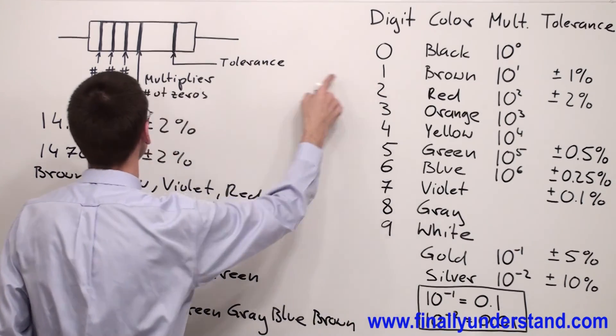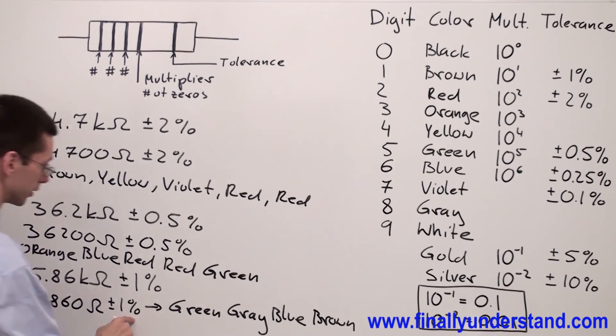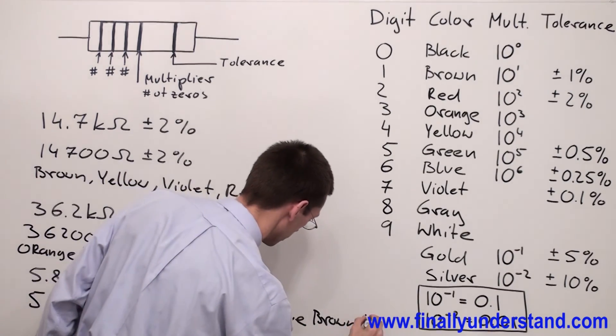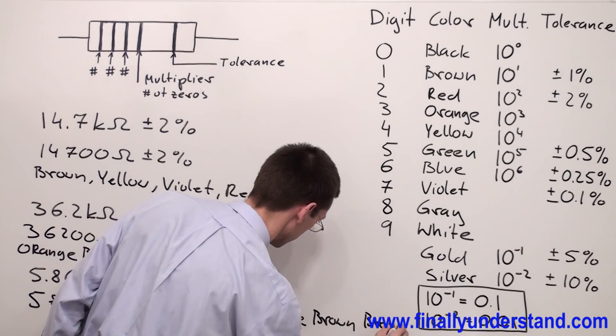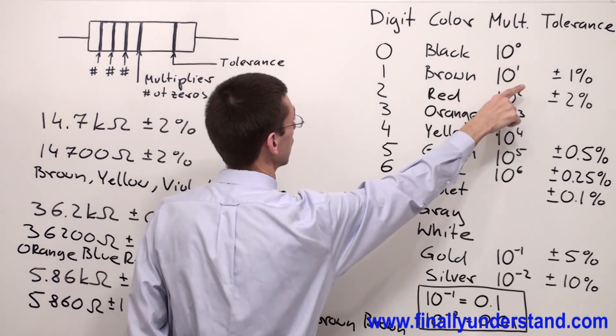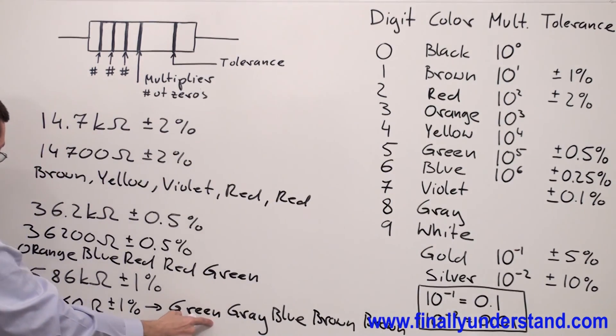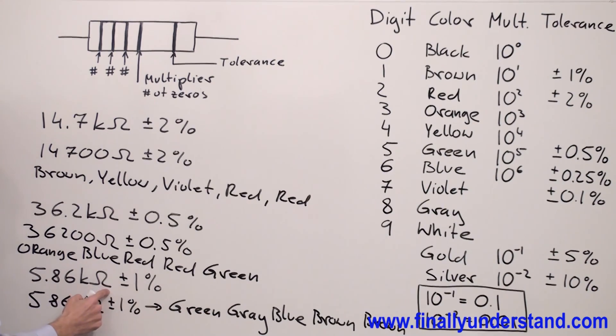Brown is 1. And the fourth position is telling me that I'm going to have 1 zero. Plus minus 1%. 1% is brown. Brown represents the tolerance of 1%. This is the color code for this resistor.